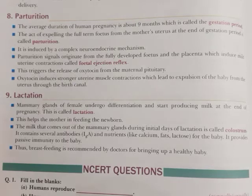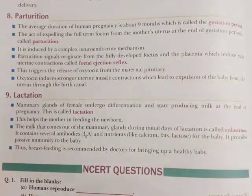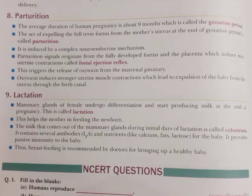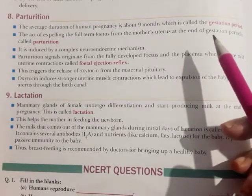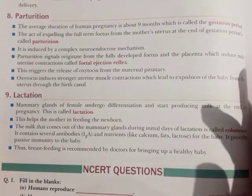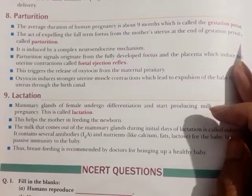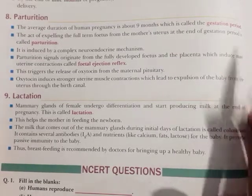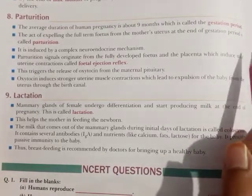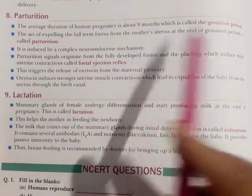The gestational period is the time of pregnancy — about 9 months. During this time, child development and embryo development occur. The fetus is fully developed. The duration of pregnancy is called the gestational period, and the average duration of human pregnancy is about 9 months.